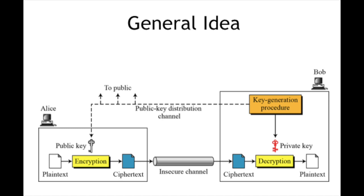The idea of asymmetric key cryptography is there is a sender and a receiver. The receiver makes a key public, which is used by the sender to encrypt the plain text to form ciphertext. Then it is transferred over an insecure channel. At the receiver end, the ciphertext is decrypted using the private key to obtain plain text.